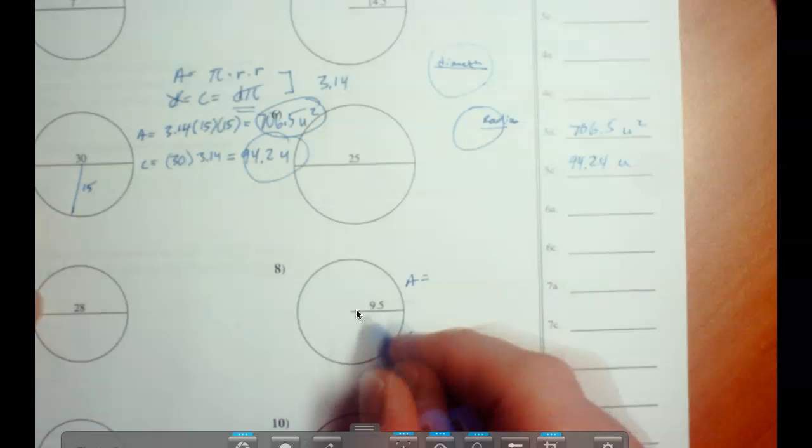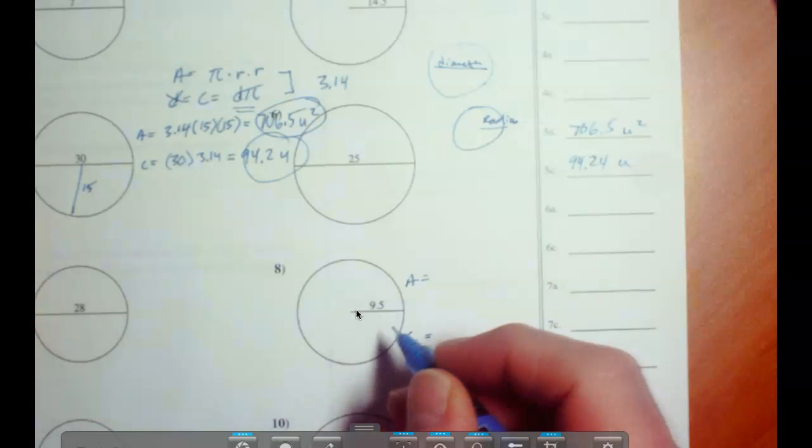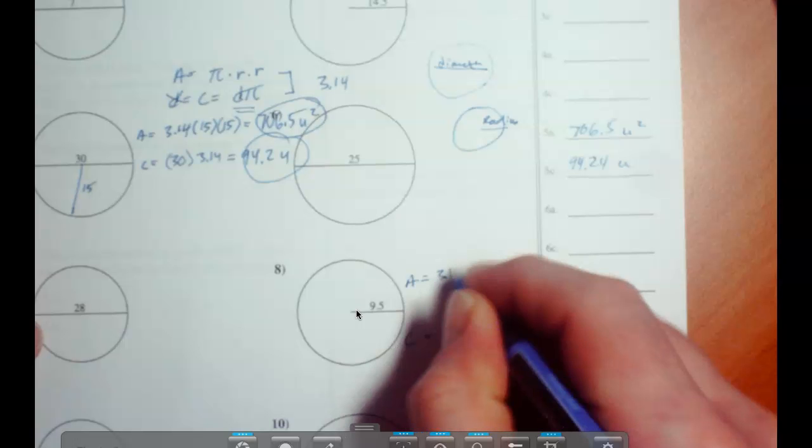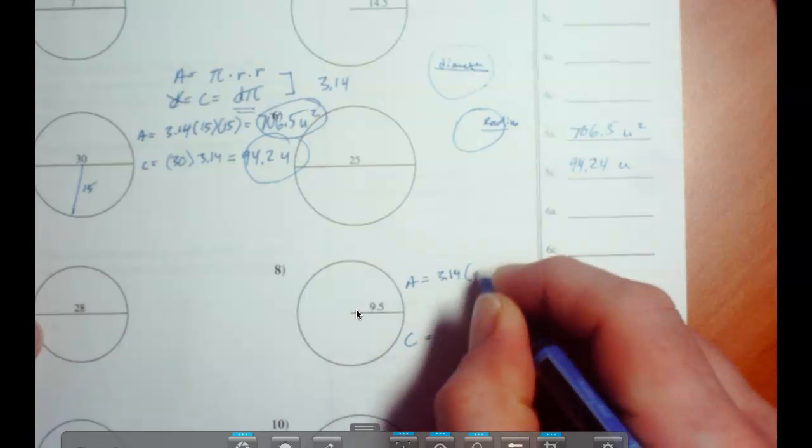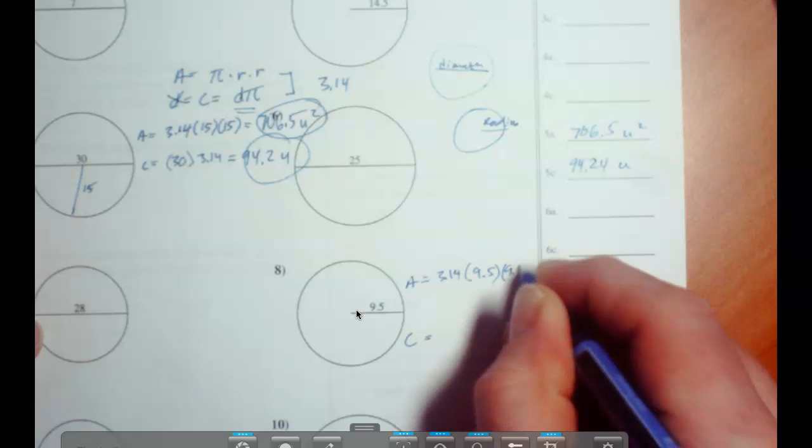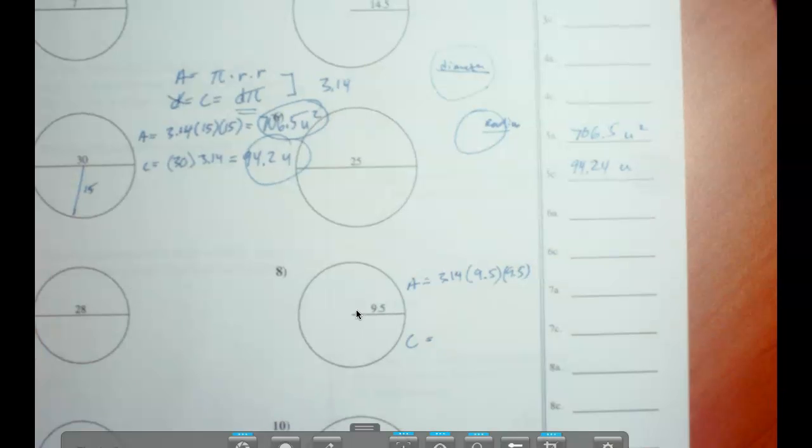Well, the area is easy here because you have the 9.5, you have the radius. So we're just going to put 3.14, that'll be times 9.5 times 9.5. You put that into the calculator, and that's going to be your area.